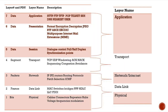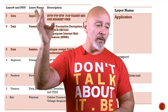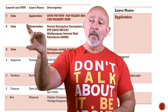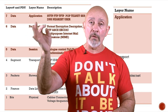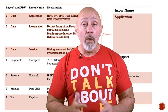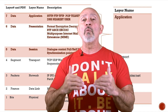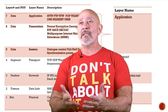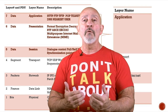So when you look at it, we have Application, Transport, Network (or Internet, because they change names), Data Link, and Physical — so four layers in the TCP/IP model. What does that mean if you're being tested or using it for troubleshooting purposes?